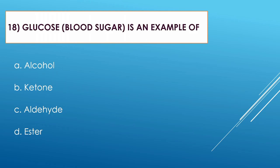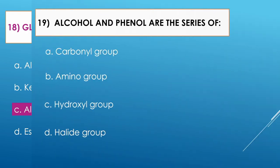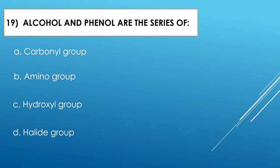Question number eighteen: Glucose (blood sugar) is an example of — Option A: alcohol. Option B: ketone. Option C: aldehyde. Option D: ester. The correct option is aldehyde. Glucose has an aldehyde functional group.